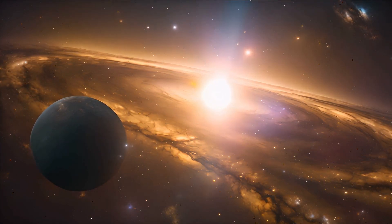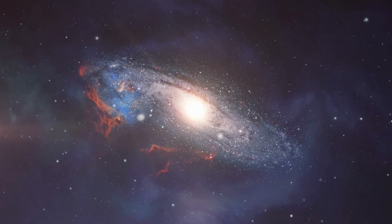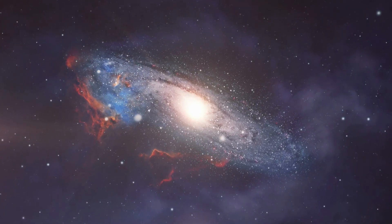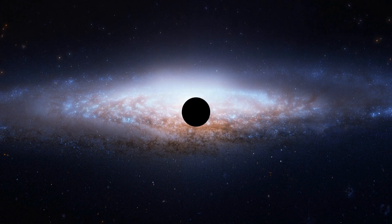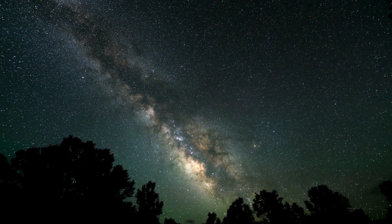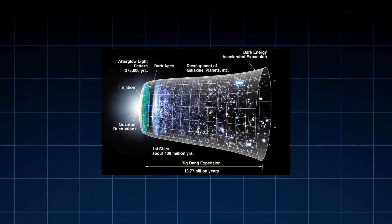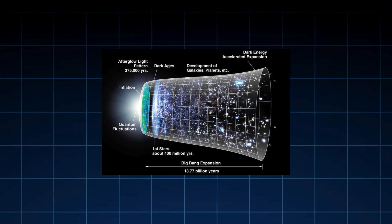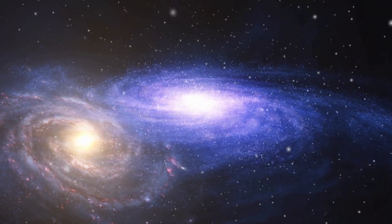Supermassive black holes, with masses millions or billions of times that of the sun, sit at the hearts of galaxies, including our Milky Way. Their origins are less clear—perhaps they form from merging smaller black holes or collapsing gas clouds in the early universe. Then there are primordial black holes, theoretical relics of the Big Bang, and intermediate-mass ones bridging the gap. Each type offers clues to the universe's evolution.